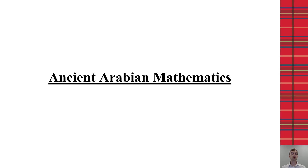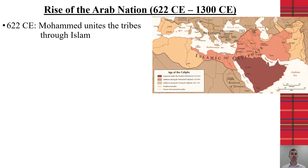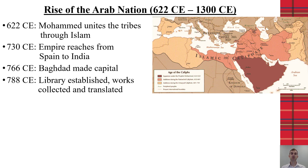In this video we will discuss ancient Arabian mathematics. Around 622, Muhammad united the tribes of the Arab nation through the religion of Islam, and they went on to conquer both east and west, so that by 730 the caliphate had an empire that reached from Spain all the way to India.